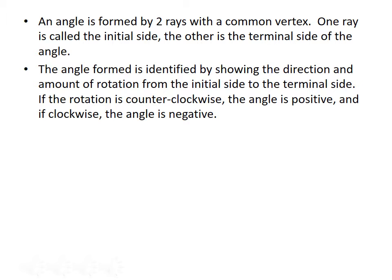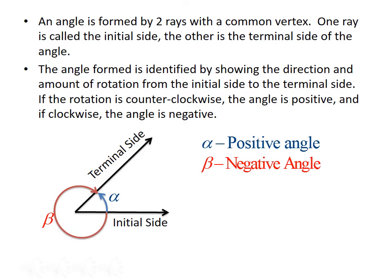If the rotation goes in the counterclockwise direction, the angle is positive, and if the rotation is clockwise, then the angle is negative. Let's consider this angle. We have an initial side and a terminal side, and there are two ways to get from one to the other. One way is to rotate counterclockwise — that's represented by alpha, and so that's a positive angle. The other way is to rotate clockwise, which is angle beta, and that's a negative angle.